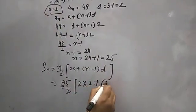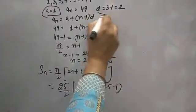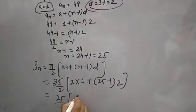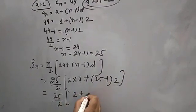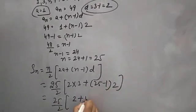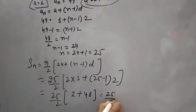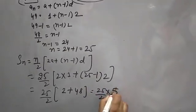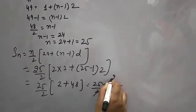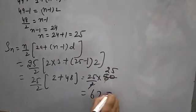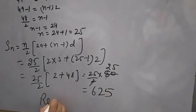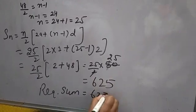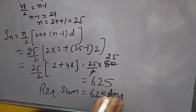So the sum = 25 over 2 into [2 into 1 + (25 minus 1) into 2] = 25 over 2 into [2 + 24 into 2] = 25 over 2 into [2 + 48] = 25 over 2 into 50 = 25 into 25 = 625. So the required sum — the sum of odd numbers between 0 and 50 — is 625. This is the answer. Thank you.